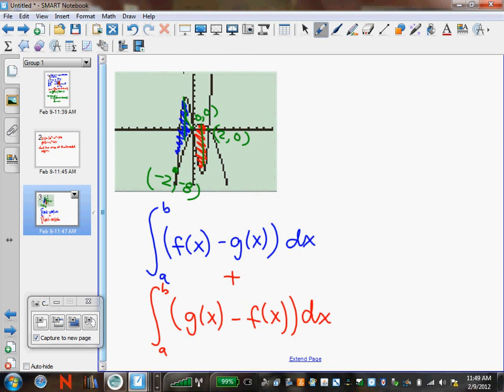So that means my first integral, my blue area, will be the integral from negative 2 to 0. So my f of x curve, which is 3x cubed minus x squared minus 10x minus negative x squared plus 2x. All of that simplifies to 3x cubed minus 12x dx.